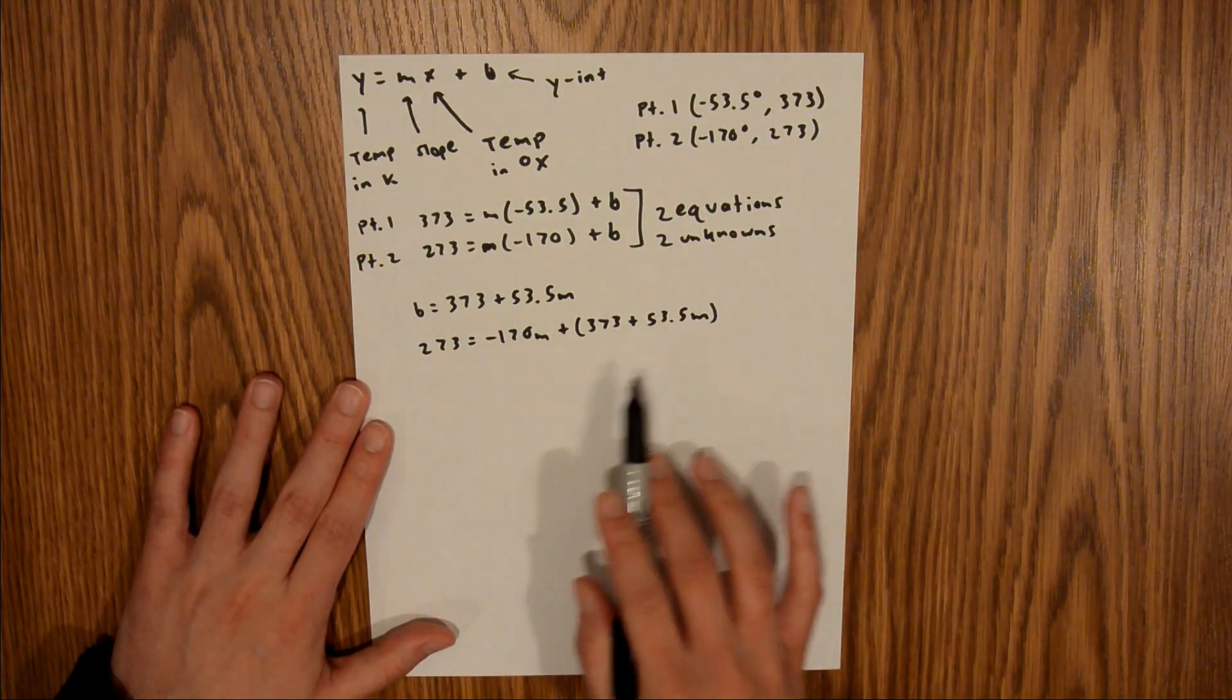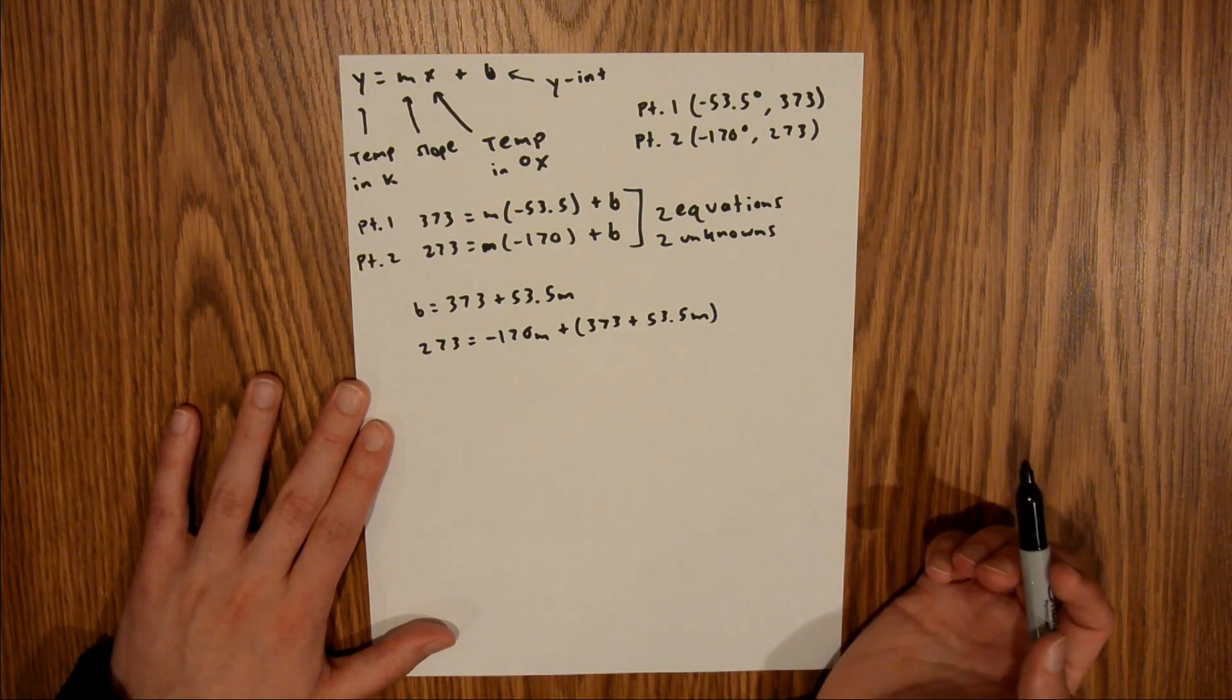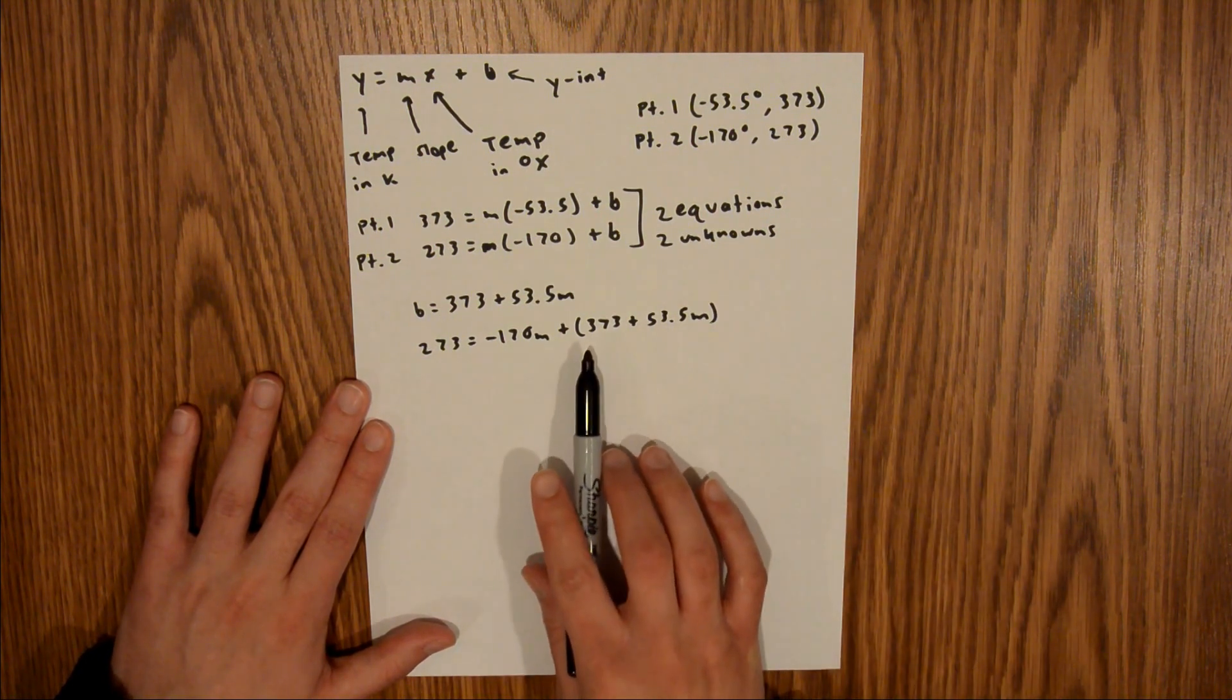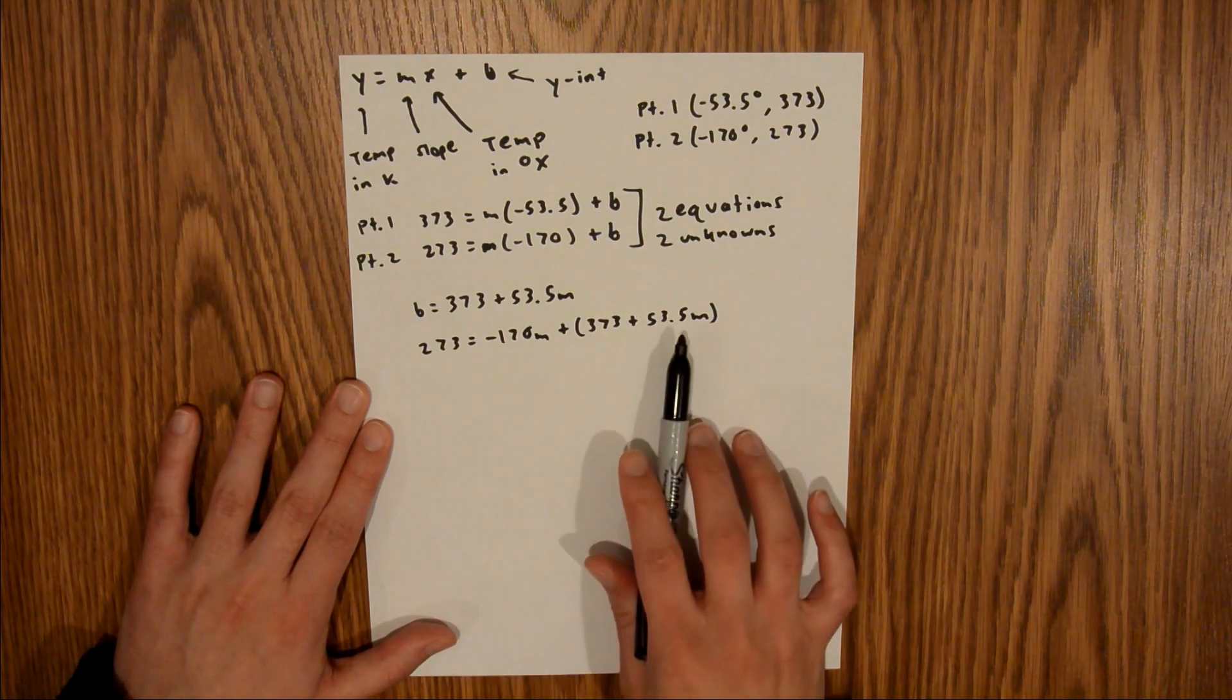So, now we have one equation and one unknown, the unknown being our value of m. And so, what I need to do now is combine like terms. And to do that, I'm going to subtract 373 from both sides, and then combine these two m terms on this side.